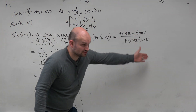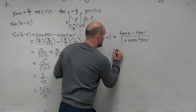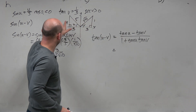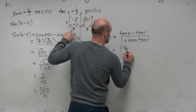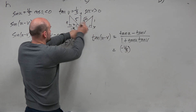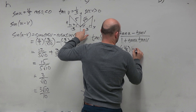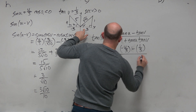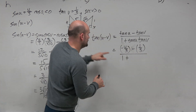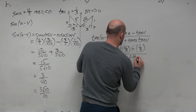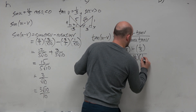So again, you have two angles and two triangles, but that's enough information for us. So let's plug it in. Tangent of u is 4 over negative 3, so negative 4 thirds. Tangent of v is 1 third, which is already given to us. All over 1 plus tangent of u, which is negative 4 thirds, times tangent of v, which is positive 1 third.